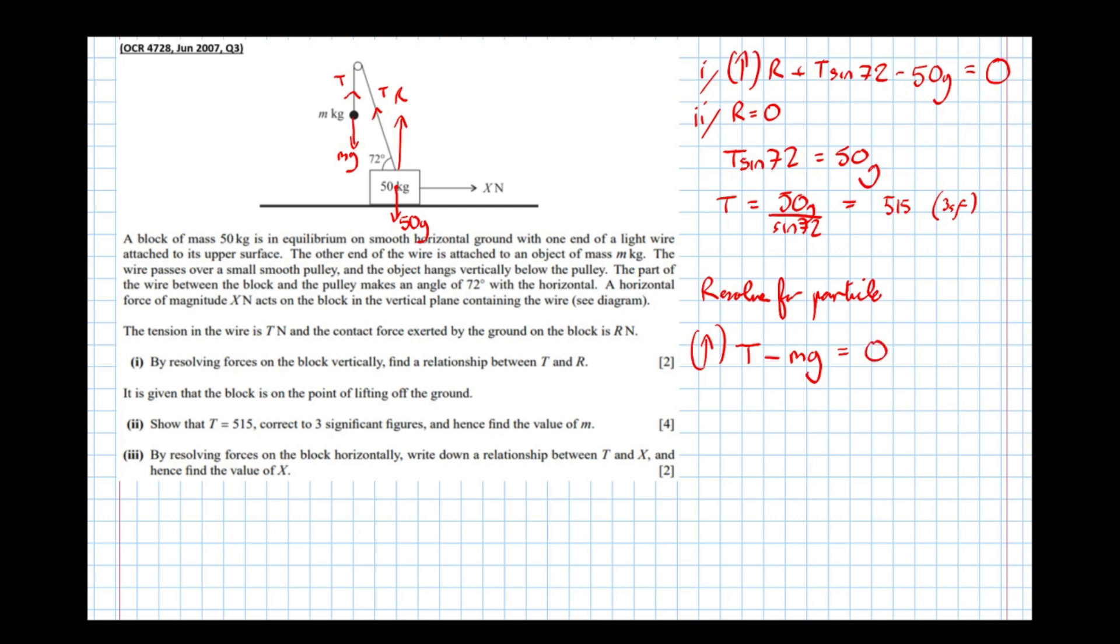Which means that m equals 515 over 9.8, so 515 divided by 9.8 equals 52.6 to three significant figures.